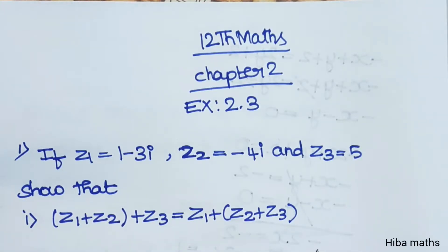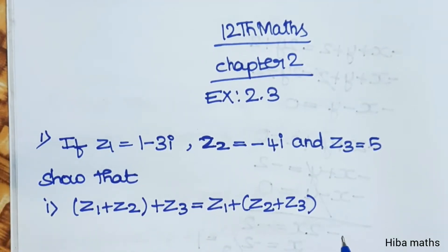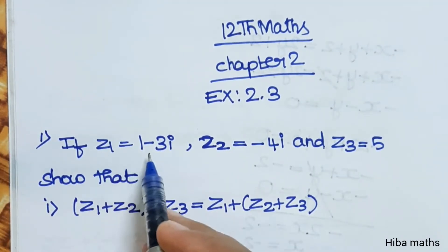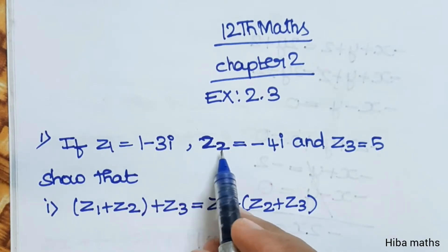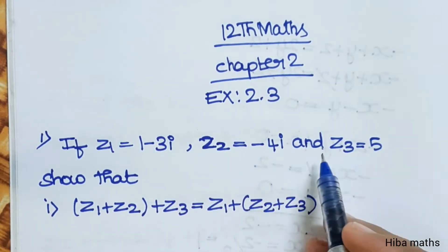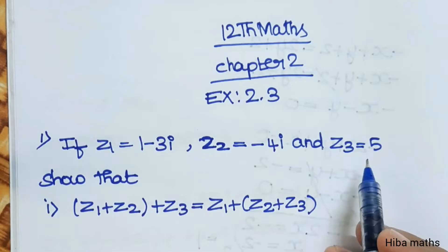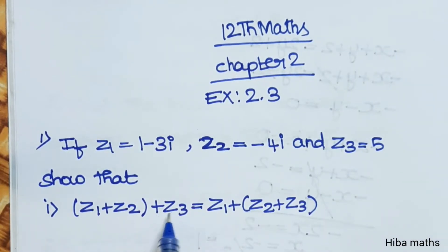Hello students, welcome to HIBA Max 12th Standard Math, Chapter 2, Exercise 2.3. First question: if z1 is equal to 1 minus 3i, z2 is equal to minus 4i, and z3 is equal to 5, show that z1 plus z2 plus z3 is equal to z1 plus z2 plus z3.